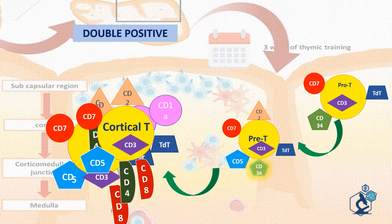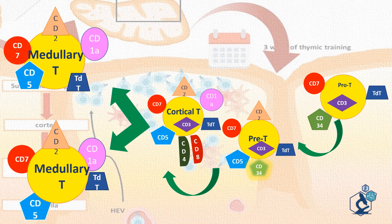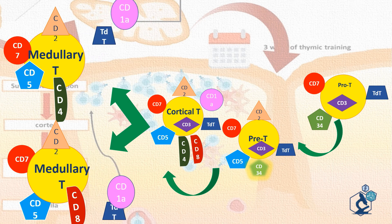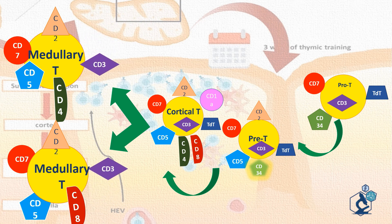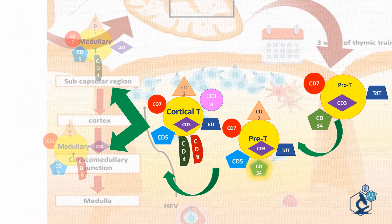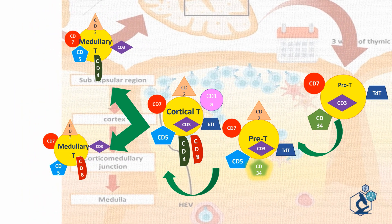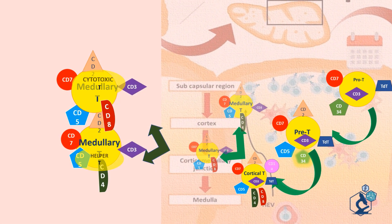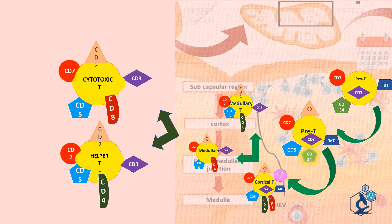Cortical thymocytes then move to the thymic medulla, where the double positive cells finish the differentiation process, becoming either CD4 or CD8 positive medullary T lymphocytes. They lose TDT and CD1A. Medullary thymocytes have a phenotype of mature T cells, which are either alpha-beta or gamma-delta positive and demonstrate non-germline patterns of TCR gamma or TCR delta genes. Mature T cells are characterized by membrane expression of CD3 and enter the blood as either mature T helper (CD4 positive) or cytotoxic/T suppressor (CD8 positive) cells.